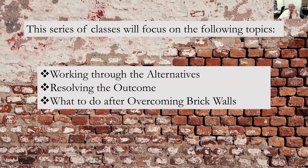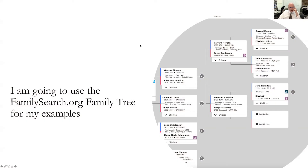We're out there wondering where we're going to go with this person who just absolutely seems to have disappeared off the face of the earth, or we have a name that somebody passed down to us and we have no idea where it is. I'm going to use the FamilySearch.org family tree for my examples, because it's the best place to go — it's collaborative and includes a lot of information from people's input over the last hundred-plus years.